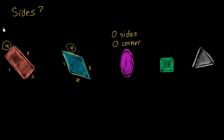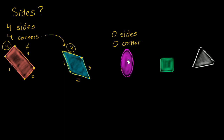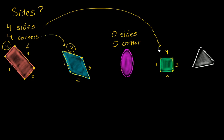Let me write that down for all of them. This one has four sides, and we can also count the corners — we have one, two, three, four corners. This shape over here also has four sides, and it has one, two, three, four corners. So four sides and four corners actually describes both of these shapes. This one has zero sides and zero corners. And what about the green one? Let's just see — one side, two sides, three sides, and four sides. And it also has one, two, three, four corners. So this is also four sides and four corners.